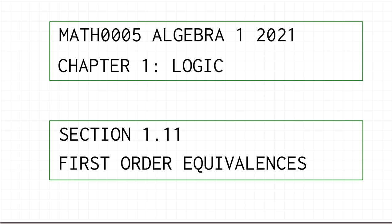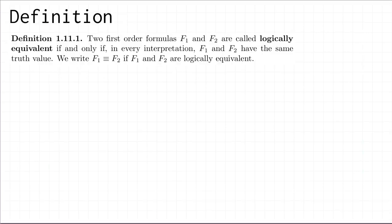We're going to do the same thing in first-order logic with the same motivation. Here's the definition: two first-order formulas, call them F1 and F2, are logically equivalent if and only if in every interpretation they have the same truth value. We write F1 ≡ F2 (using a three-line equals sign) to mean that they're logically equivalent. The key point is they must have the same truth value in absolutely every interpretation.